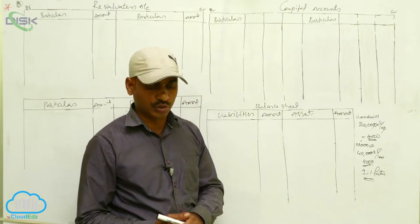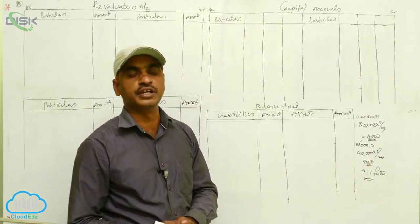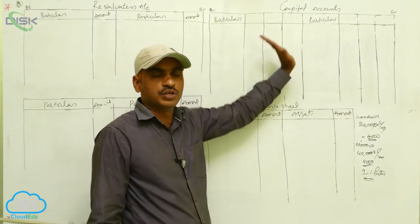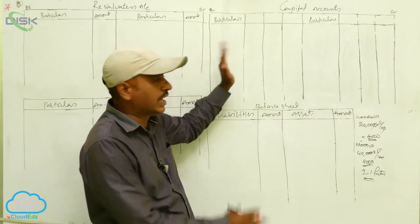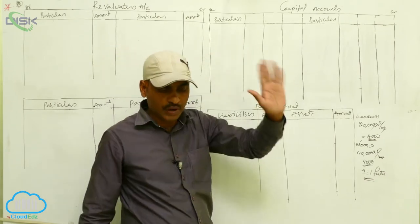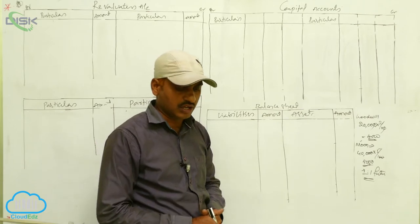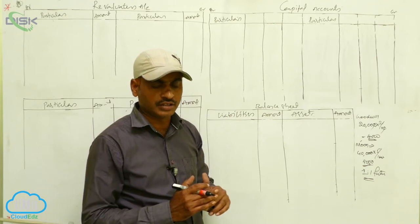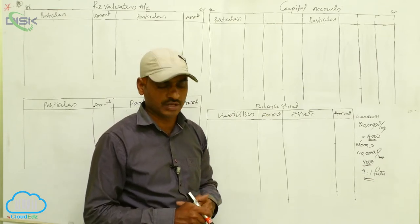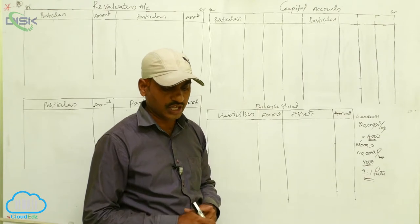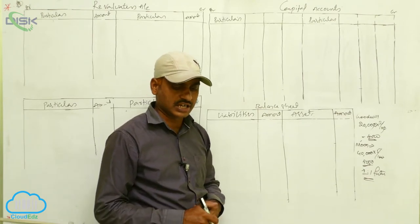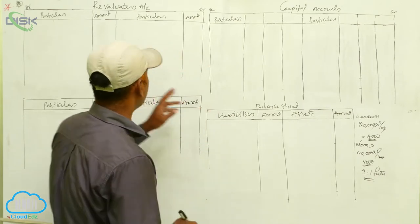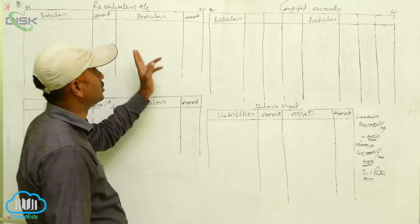The amount due to Moon will be transferred to his loan account at 12% interest per annum. This means continuing partners are not paying Moon any money on the retirement day — Moon receives no cash at retirement. We need to prepare necessary ledger accounts and the balance sheet of the new firm.